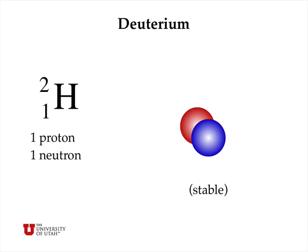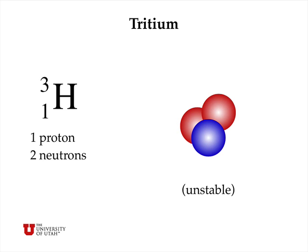It's possible to purify deuterium and get it into pure form. There's a third isotope of hydrogen with the special name tritium. Tritium has two neutrons and a single proton, and this is too many neutrons, so the nucleus of tritium is actually unstable.